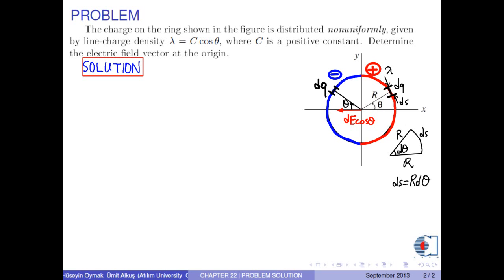Similarly, if we take a differential charge dq on the negative side, the electric field at the origin due to this charge is obtained as dE times cosine theta. As a result, total net electric field is obtained as 2 times integral of dE times cosine theta.